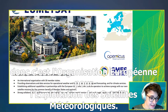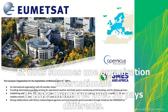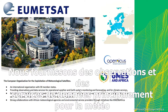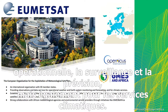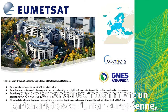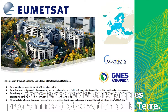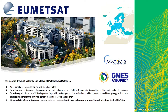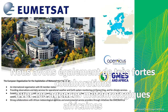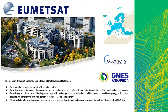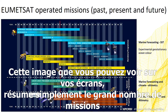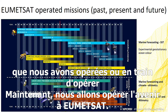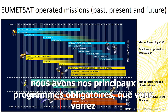EUMETSAT is the European Organization for the Exploitation of Meteorological Satellites — an international member state organization with 30 different countries. We provide observations and data services mostly for operational weather monitoring and forecasting, but also for climate services. In more recent years we've established additional capabilities particularly in partnership with the European Union under their earth observation programs, and we have very strong collaborations with African meteorological agencies through initiatives like GMES and Africa.